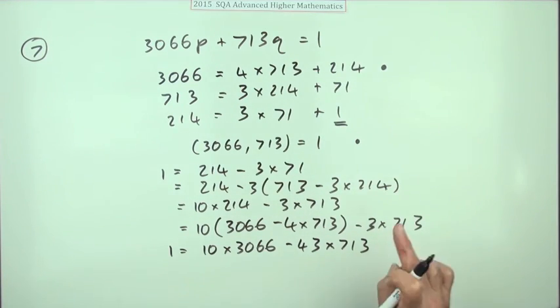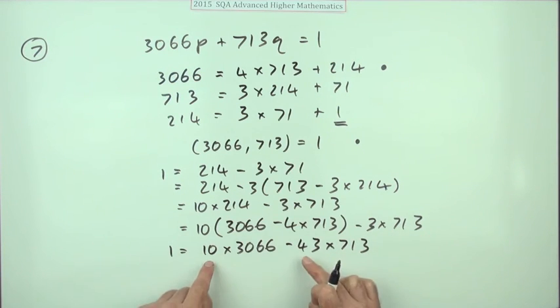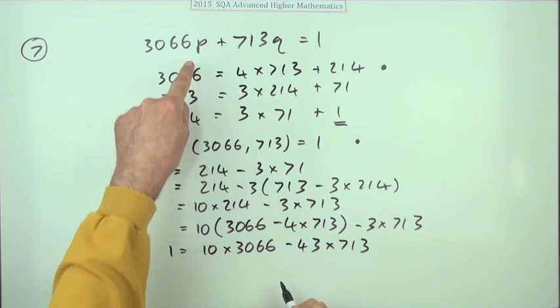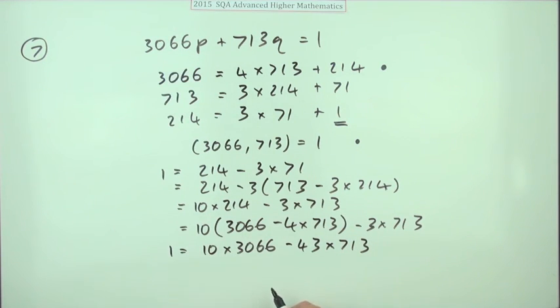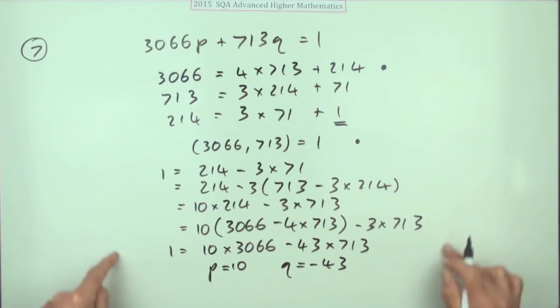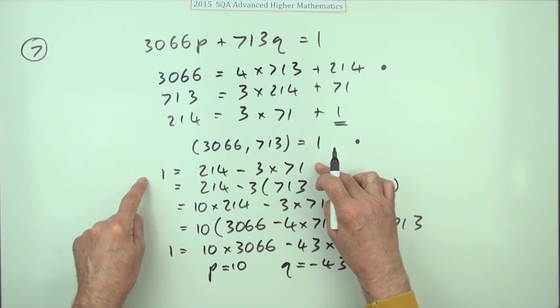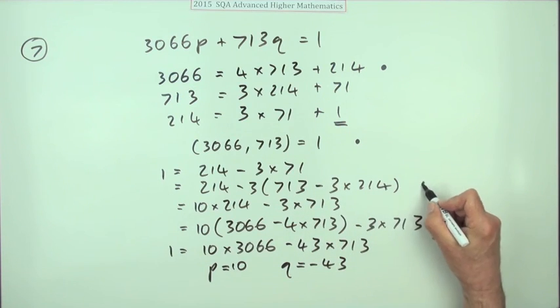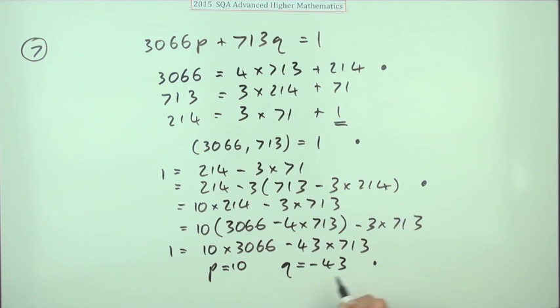Or rather it's one of them. We only have to find one pair of integers that works. So for this one, we have to finally state it though. The p was the multiple of 3066, so p equals 10, and the q is the multiple of 713, so the q is negative 43. And the marks for this part would have been not just that initial statement but starting to substitute it was here, and then finally the last mark was for stating the values of p and q.